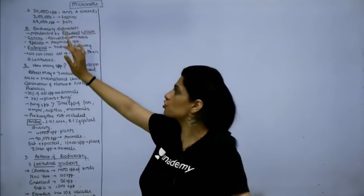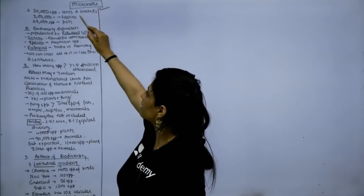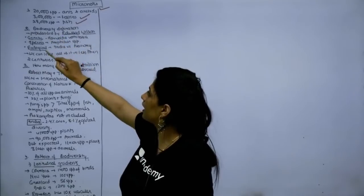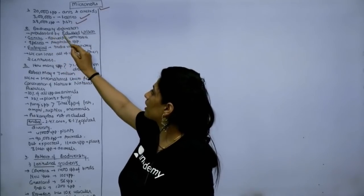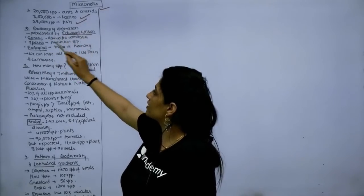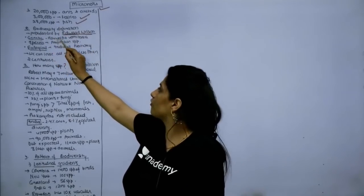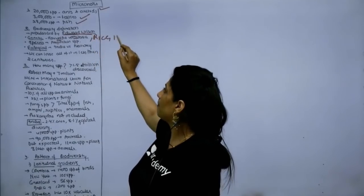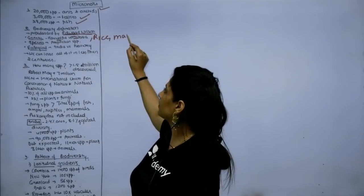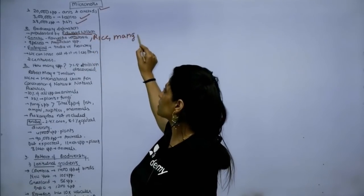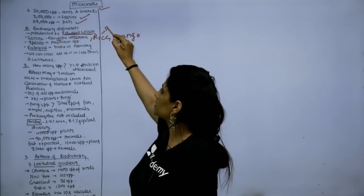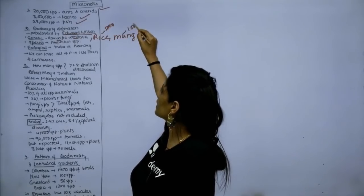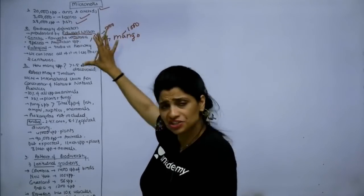In micro notes you write: how many species of ants, beetles, fish; biodiversity definition and who popularized it; Edward Wilson's contribution; genetic diversity examples — Wolfia vomitoria, rice with 50,000 strains, mango with 1,000 varieties. Everything in short, little by little.